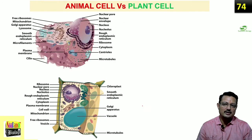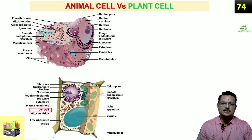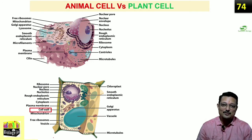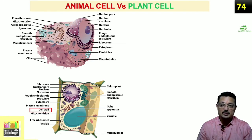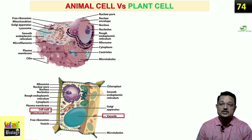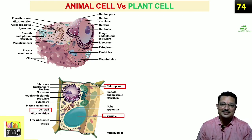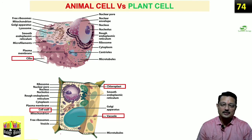Now let us move to the final part — differentiating between plant cell and animal cell. First and foremost: presence of a cell wall. In bacteria the cell wall is made of peptidoglycans, in fungi it is made of chitin, but in plants it is made of cellulose. So a cellulosic cell wall is present in plant cells but not in animal cells. Regarding vacuole size: the larger vacuole in plant cells pushes the nucleus to a corner — another point of difference. Chloroplast — the kitchen of the cell — is present only in plant cells.